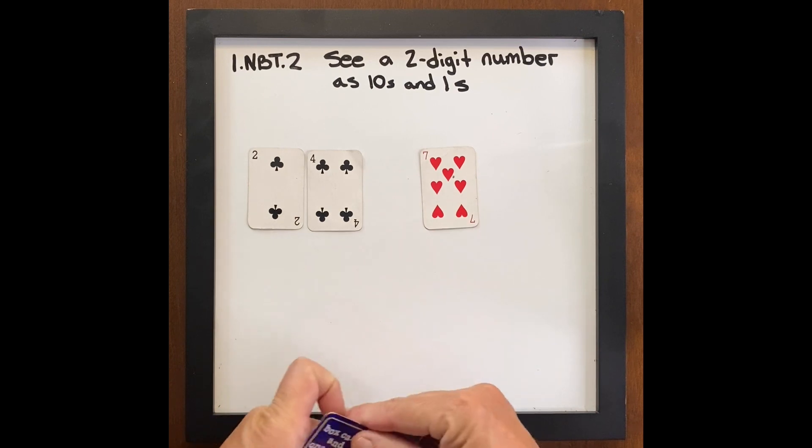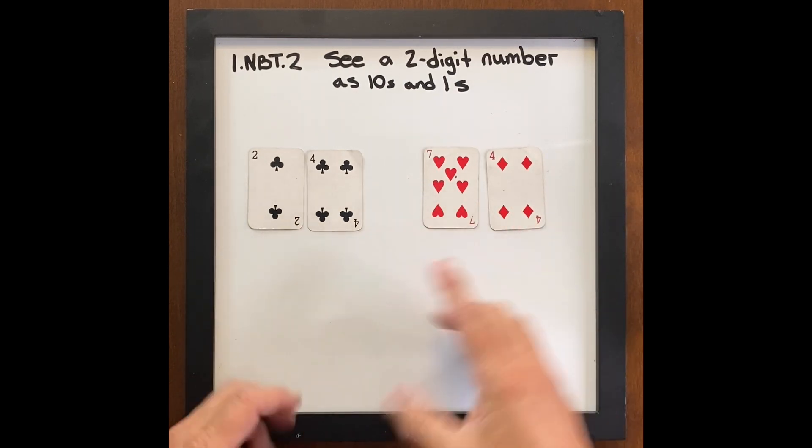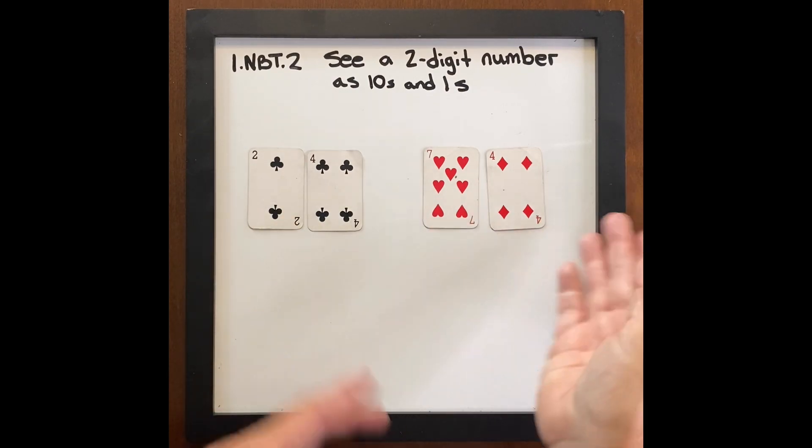Seven tens four ones. Seventy-four. So then you could also build in 74 is greater than 42.